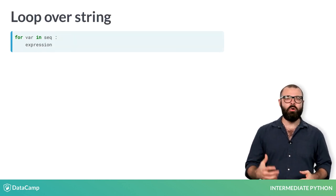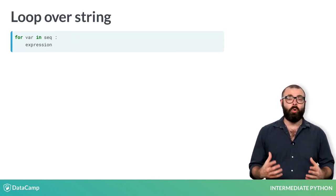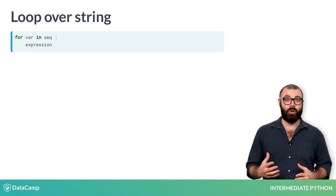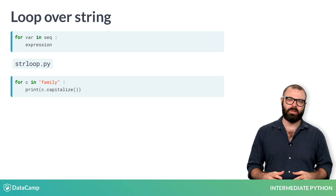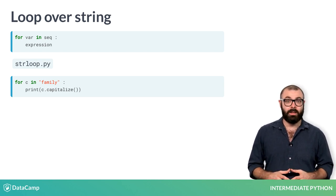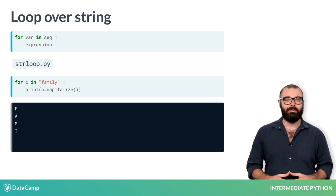The for loop doesn't only work with lists. You can also create a for loop that iterates over every character in a string, family for example, and stores it in c, one after the other. Inside the loop, the string c is capitalized and printed out. This time, six different printouts occur.